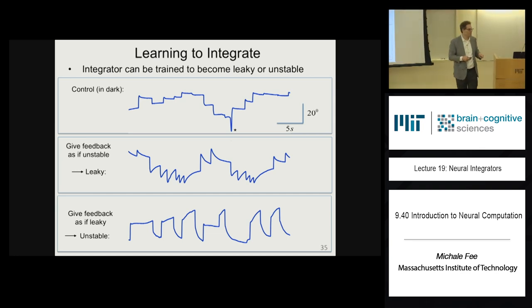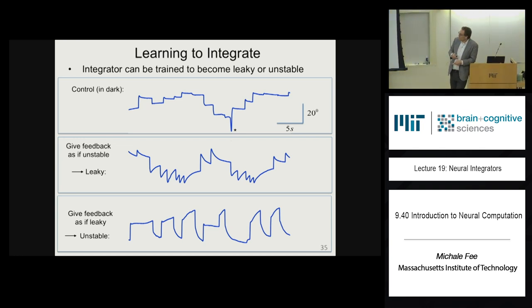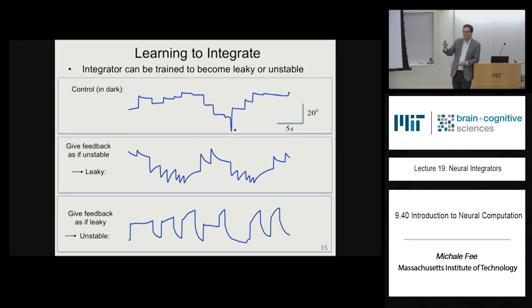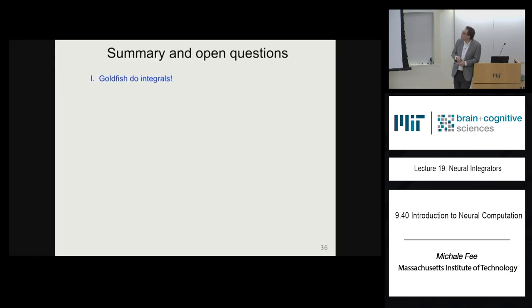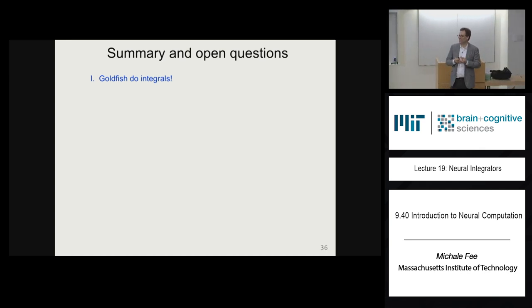That learning circuit — the circuit that implements the change in synaptic weights of the integrator circuit — actually involves the cerebellum. There's a whole cerebellar circuit involved in learning various parameters of the ocular motor control system that produces these plastic changes.